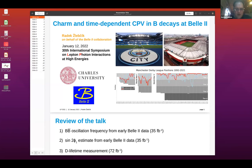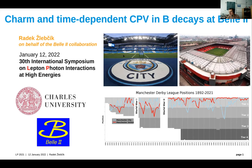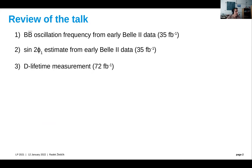The next talk is given by Radek on charm and time-dependent CP violation in BDKs at Belle2. He will speak about the measurement of the oscillation frequency in early Belle2 data, CP violation and sin(2φ1), and the D-meson lifetime measurement. What is common for all of these is that they rely on displaced vertices and time measurement from them.